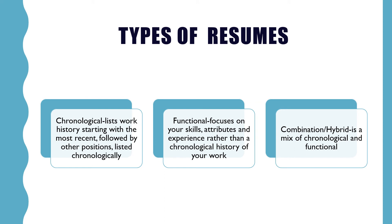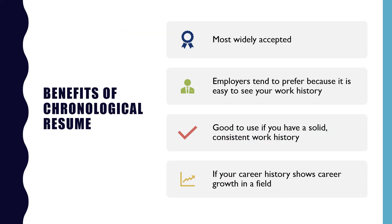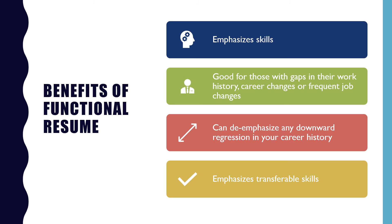There are three main types of resumes. Chronological resumes list your work history starting with the most recent, followed by other positions listed chronologically. Functional resumes focus on your skills, attributes, and experience rather than a chronological history of your work. A combination or hybrid resume is a mix of chronological and functional. Chronological resumes are the most traditional and widely accepted type — employers prefer them because it is easy to see your work history, and they work best if you have a solid, consistent work history showing career growth in a field.